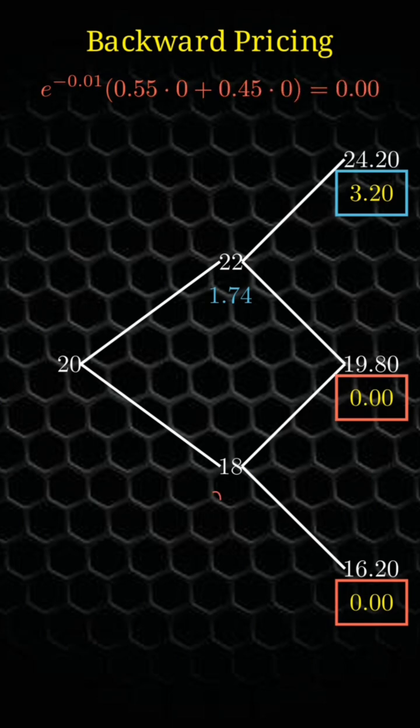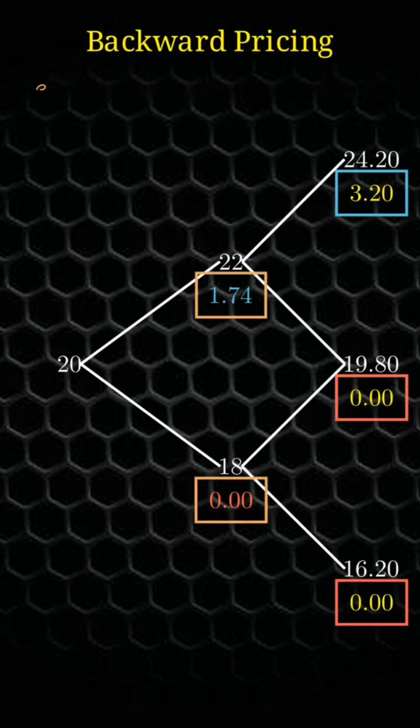Then we move backward again for calculation of the premium or the price at T equals 0, which is equal to 0.95.